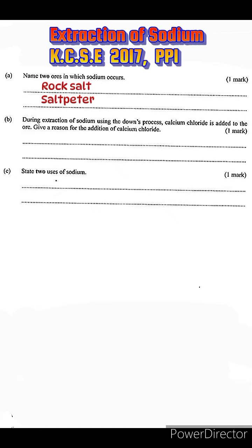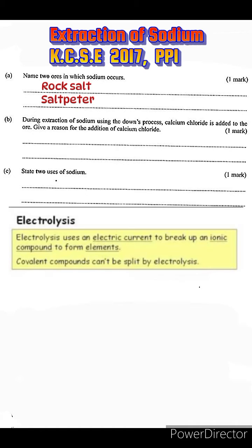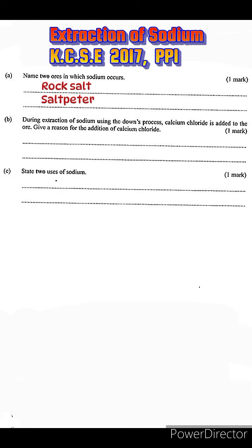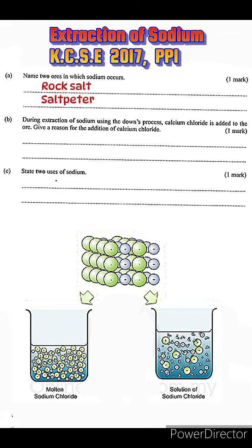Part b: during extraction of sodium using the Downs process, calcium chloride is added to the ore. Give a reason for the addition of calcium chloride. In the Downs process, solid sodium chloride is heated until it melts so that electrolysis can take place. Electrolysis is a process whereby ionic compounds like sodium chloride have electricity passing through them in order for decomposition to take place, eventually leading to the formation of sodium metal and chlorine gas.